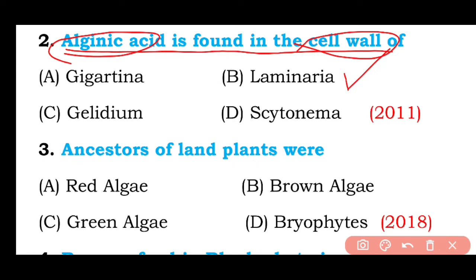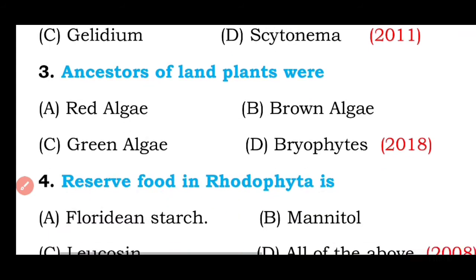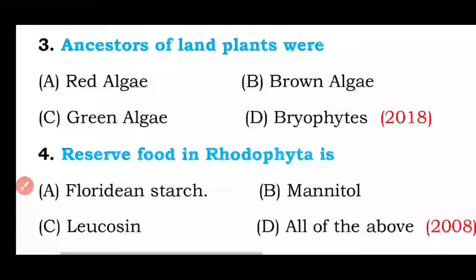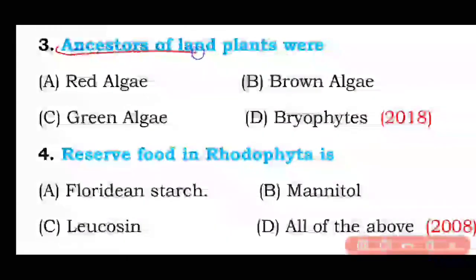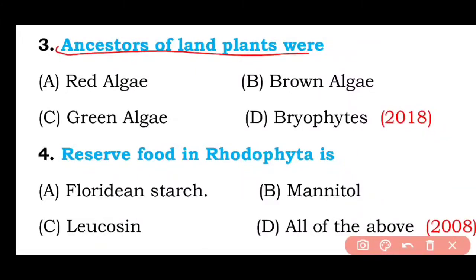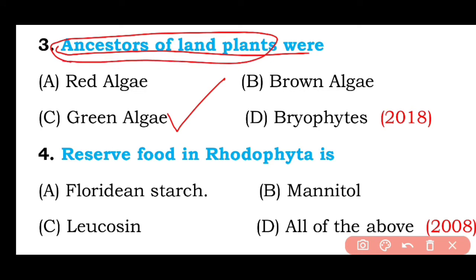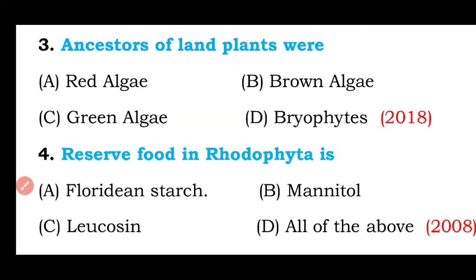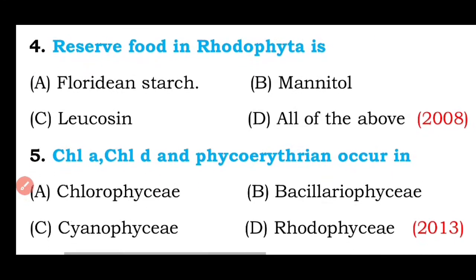Question number three: Ancestors of land plants were red algae, brown algae, green algae, or Graphite? The correct answer is option C. According to research, green algae such as Chara are considered ancestors of land plants.